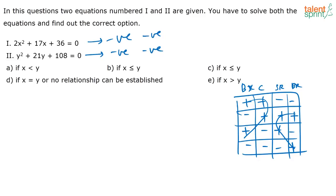Now let us look at the first equation: 2x² + 17x + 36 = 0. What is the product of A and C? 36 into 2, correct? That is equal to 72. So now I need two numbers whose product is 72 and whose sum is 17.